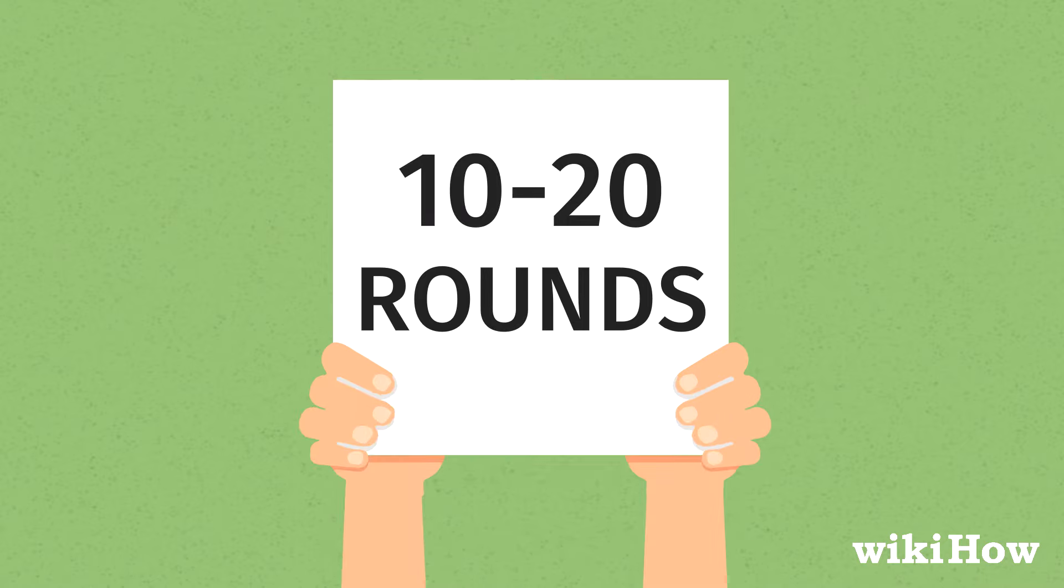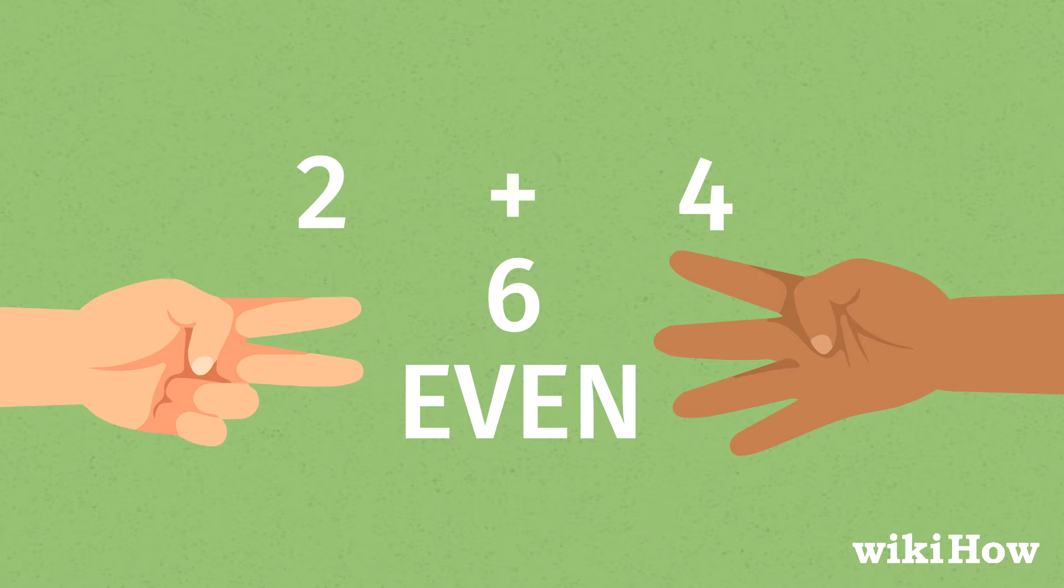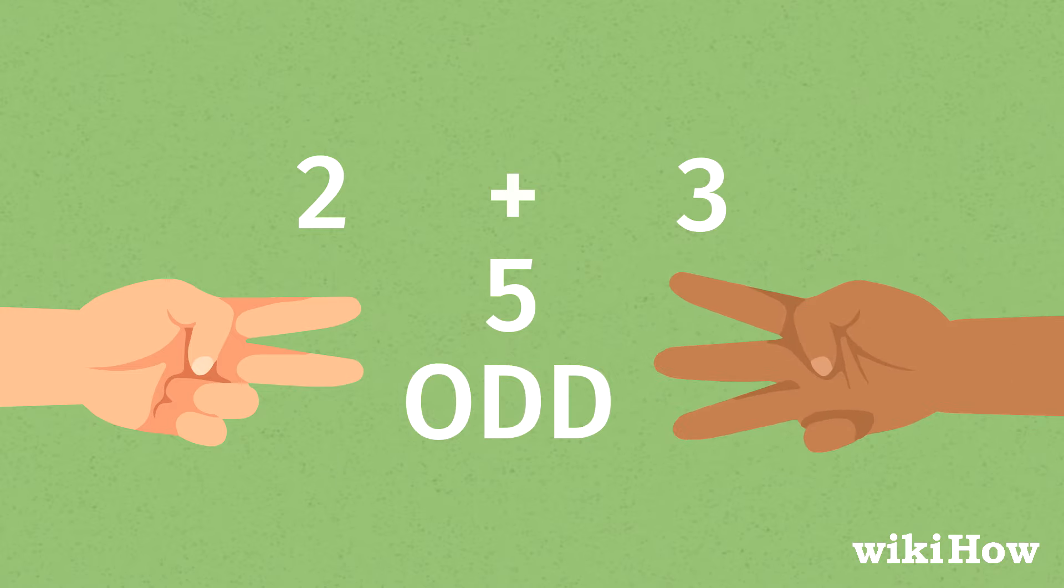Then, add up the total number of fingers between both of your hands. If the number is even, the even player gets one point for that round. If the number is odd, the odd player gets one point.